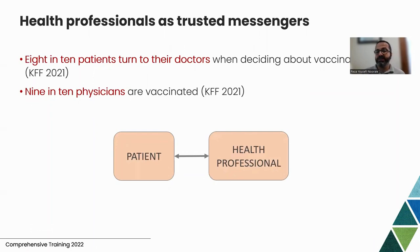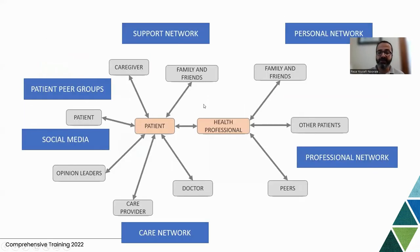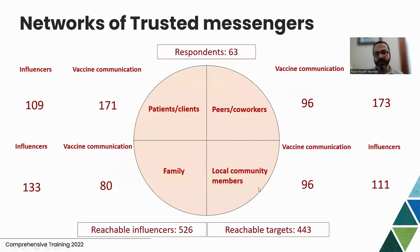Eight in ten patients in different studies rely on their doctors when deciding about getting vaccines, and most healthcare providers are already vaccinated, so they can serve as trusted messengers. In a broader context, patients also talk with family members, other patients, caregivers, and opinion leaders, while healthcare professionals talk to their personal and professional networks. The cascade of social relationships and influence goes well beyond the immediate conversation between a healthcare provider and a patient.